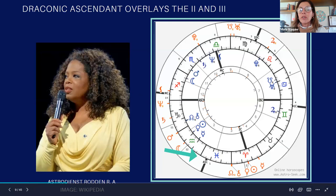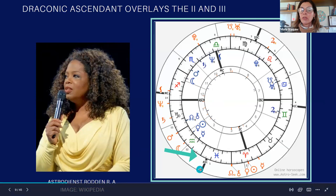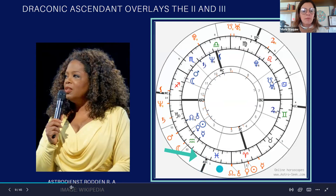I think that Oprah Winfrey is a wonderful example of how this works, because we can see how her draconic ascendant is linked to the tropical second and third houses.